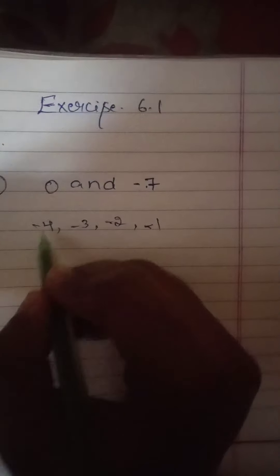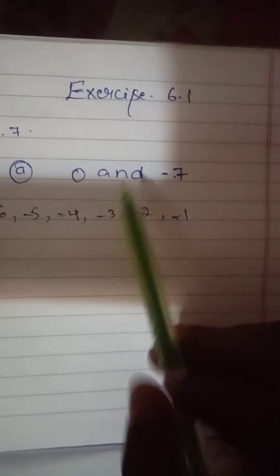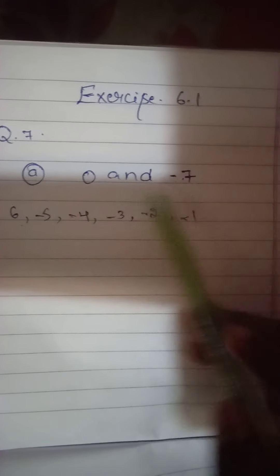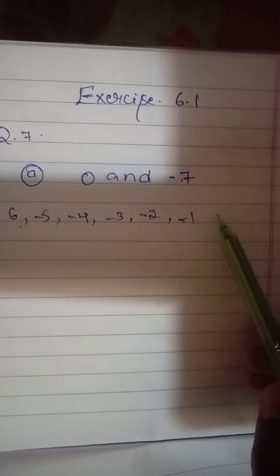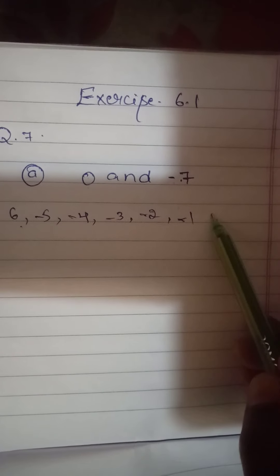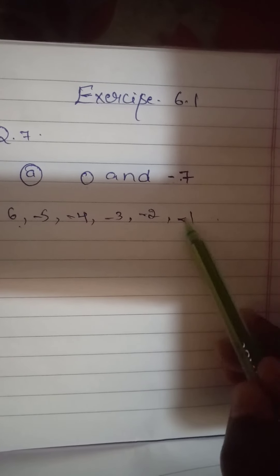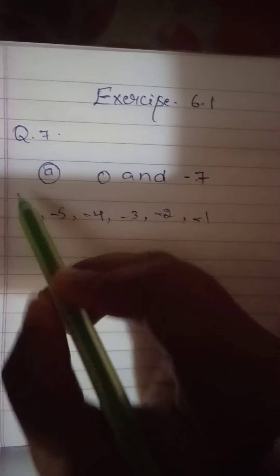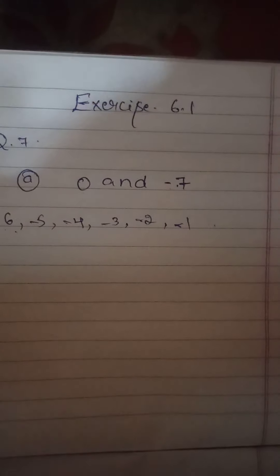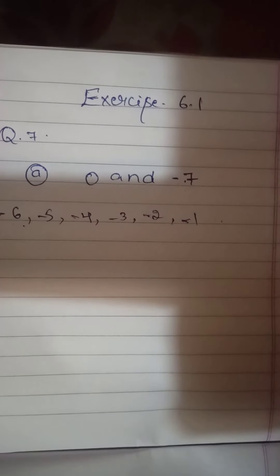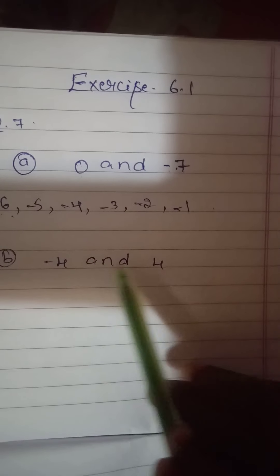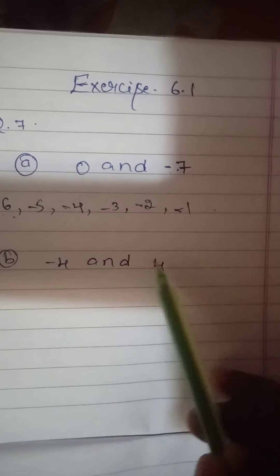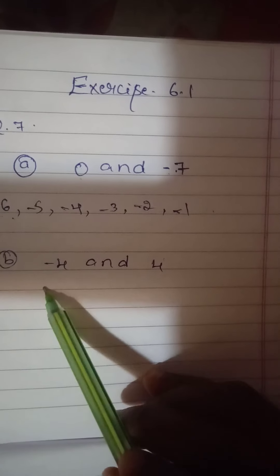The integers are: minus 6, minus 5, minus 4, minus 3, minus 2, minus 1. So the answer in increasing order is: minus 6, minus 5, minus 4, minus 3, minus 2, minus 1. Next question is minus 4 and 4 — negative with positive, right side and left side.